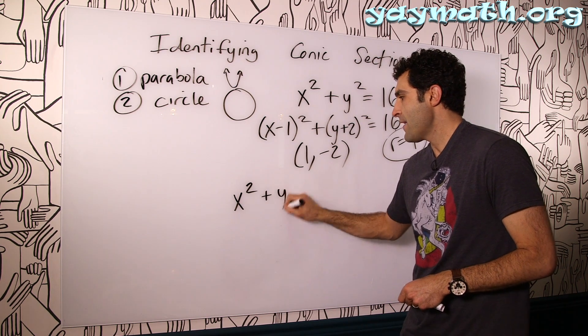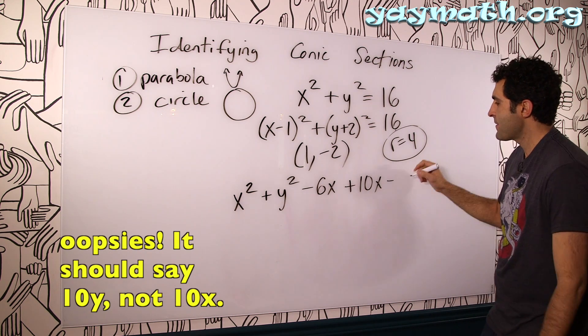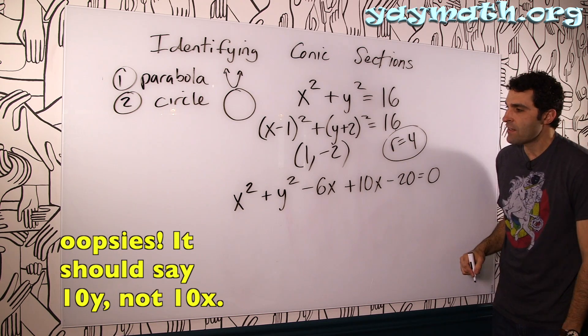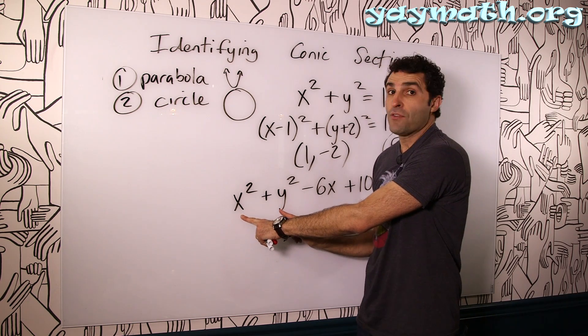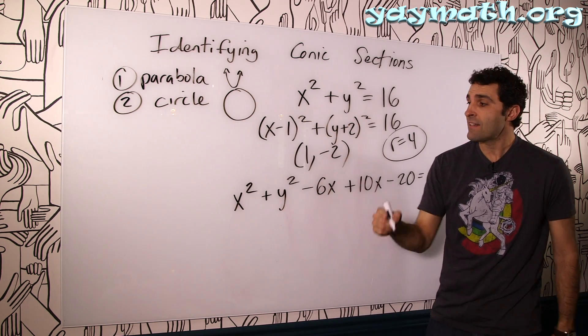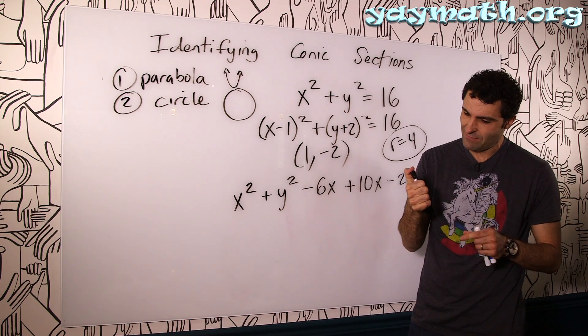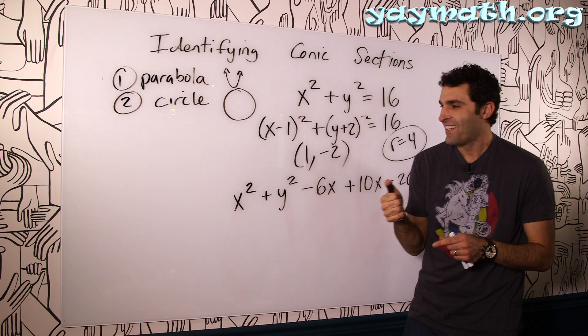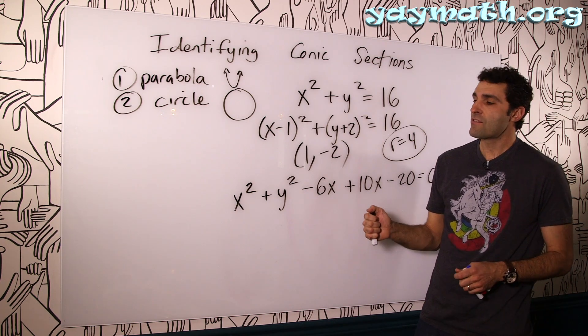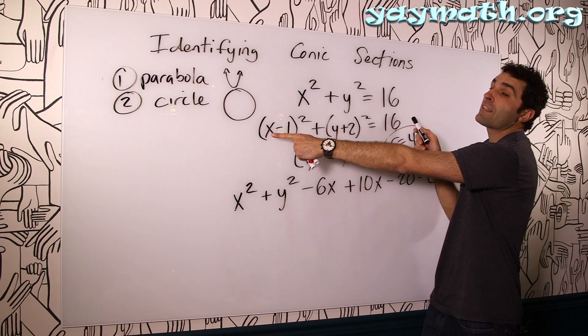A simple example would be like, let's say, x squared plus y squared minus 6x plus 10x minus, let's say, 20 equals zero. Again, at first glance, looks intimidating. But we notice x squared and y squared are both squared. x and y are both squared, and there's a plus between them. So we're automatically thinking circle. And another thing is that we notice no coefficients out here.